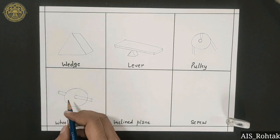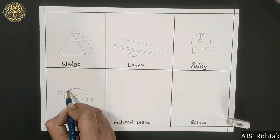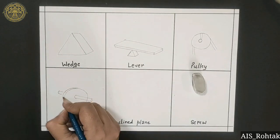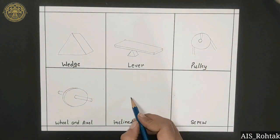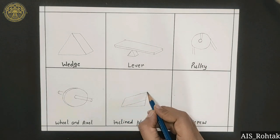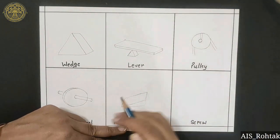Then draw a circle like this and erase the extra lines. Now fifth one is inclined plane. For this we draw two slanting lines and join with again two slanting lines.